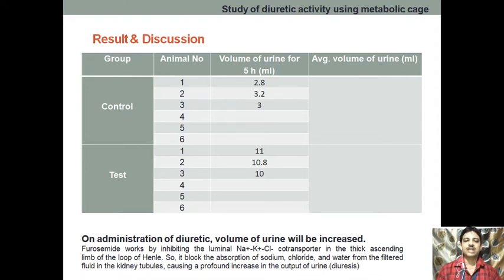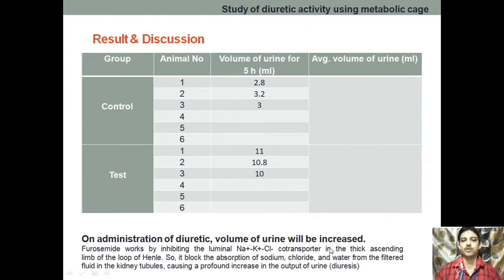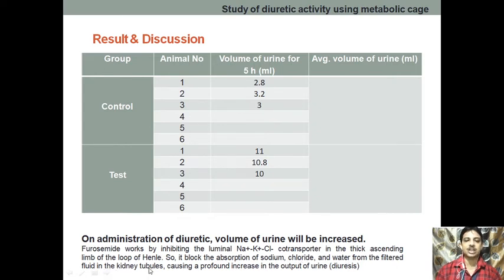When we administer frusemide, it acts by inhibiting the luminal sodium-potassium-chloride co-transporter in the thick ascending limb of the Loop of Henle. By inhibiting this co-transporter, it blocks the absorption of sodium chloride and water from the filtrated fluid in the kidney tubules.